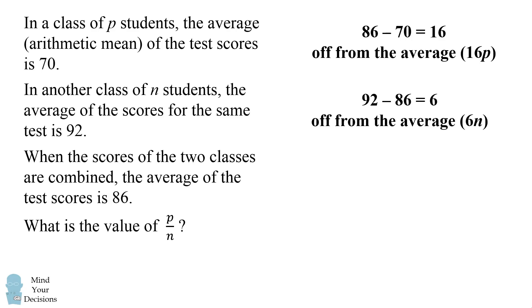Now because these two classes average out together, we can say that 16P has to be equal to 6n. And we directly get that P divided by n is equal to 6 over 16. So this is a little shortcut that you might need to use if you ever have this type of problem in an exam.